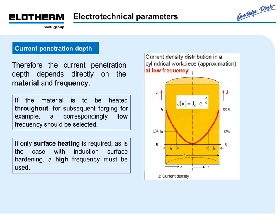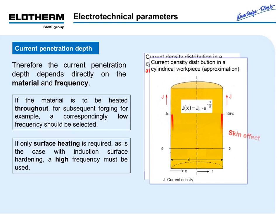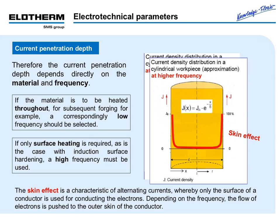In practice, if the material is to be heated throughout — for subsequent forging, for example — a correspondingly low frequency should be selected. If only surface heating is required, as is the case with induction surface hardening, a high frequency must be used. The skin effect is a characteristic of alternating currents, whereby only the surface of a conductor is used for conducting the electrons. Depending on the frequency, the flow of electrons is pushed to the outer skin of the conductor.